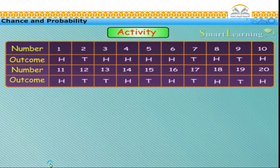Take a coin. Toss it twenty times. Record the observations as shown in the table. In the shown table, H represents head, and T represents tail.